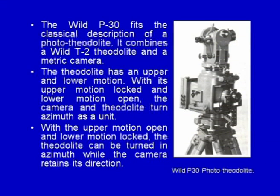The next photo theodolite is the Wild P30, which fits the classical description of a photo theodolite. It combines a Wild T2 theodolite and a metric camera. The theodolite has an upper and lower motion; with the upper motion locked and the lower motion open, the camera and theodolite turn in azimuth as a unit. With the upper motion open and the lower motion locked, the theodolite can be turned in azimuth while the camera retains its direction.